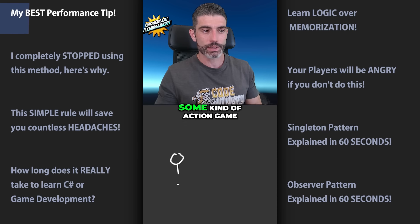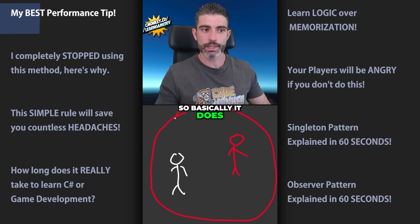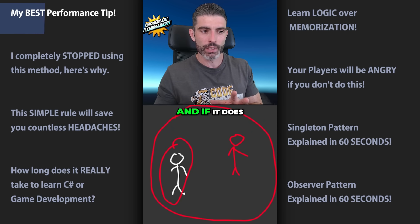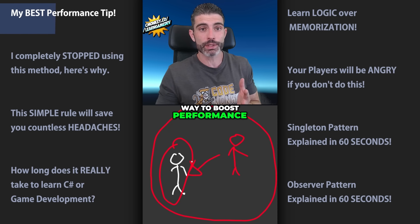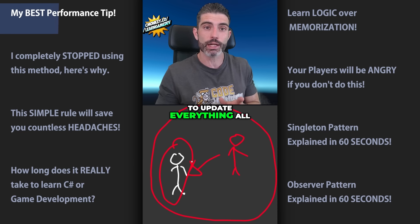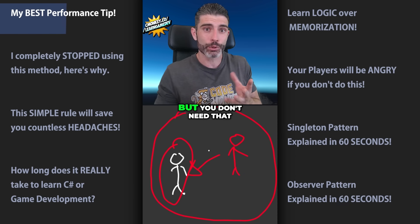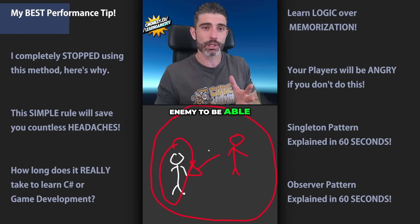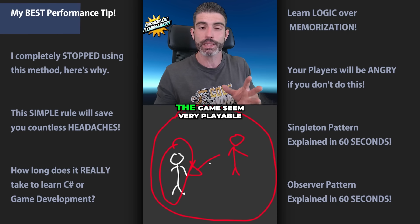However, let's say you're making some kind of action game. You've got the player and then you've got some kind of enemy, and the enemy is running some kind of find-target logic. So basically it does a sphere cast around the enemy, tries to identify the player, and if it does identify the player, sets the player as a target and then runs whatever state machine it has for actually attacking the player.